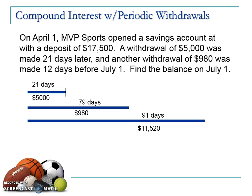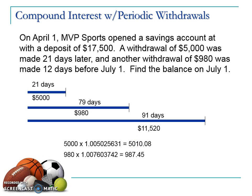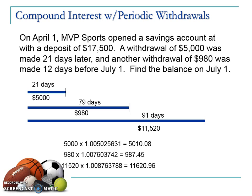We're now ready to calculate the compounded amount of each of these different values. We will look up on our 3.5% compounded daily table the multiplier for 21 days and multiply it by the $5,000 that sat in the account for 21 days — that $5,000 gained interest of $10.08. Do the same with the $980: look up the value from the table associated with 79 days. During those 79 days, the $980 earned $7.45 in interest. Then do the same with the net deposit of $11,520 that remained in the account the entire 91 days, using the value from the 3.5% compounded daily table associated with 91 days — this has grown to $11,620.